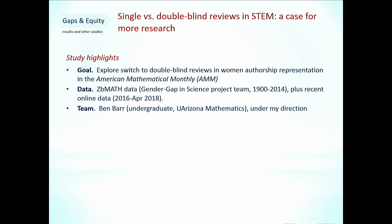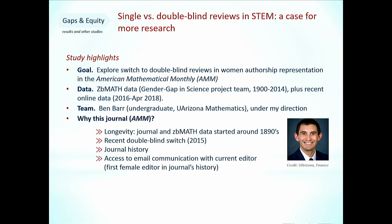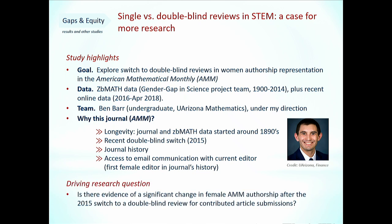The team was, under my direction, Ben Barr, who was an undergraduate at the University of Arizona, now working in industry. Why this journal? The longevity was part of it, and zbMATH data was available. It had a recent double-blind switch in 2015 — something unusual for just about every journal in math. The history of the journal was quite interesting, and I maintained communications with the current editor, who was the first female editor of the journal in all those years. That also helped drive this research.